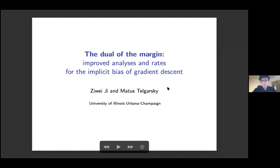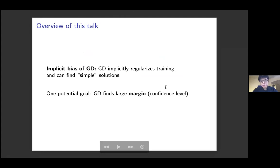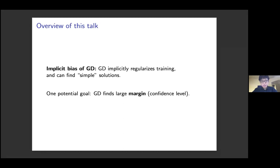Thanks for the introduction. I will talk about joint work with my advisor, Matius Telgarski. Here is an overview of this talk. As the title suggests, we will discuss implicit bias of gradient descent — we want to understand why gradient descent can implicitly regularize the training process and find simple solutions that have good generalization. One specific goal is proving gradient descent can find large margins, where margin could be interpreted as a confidence level.